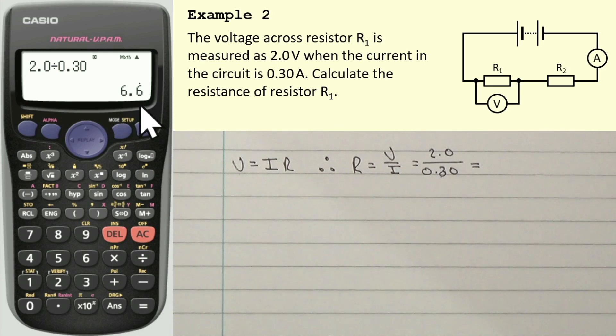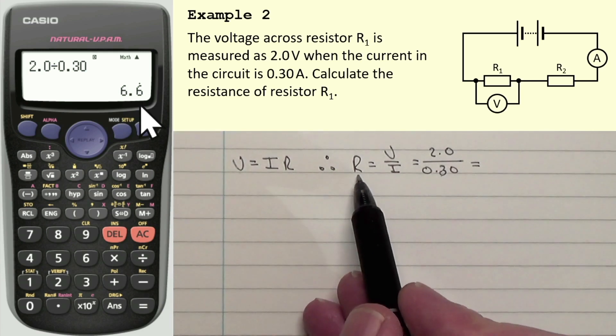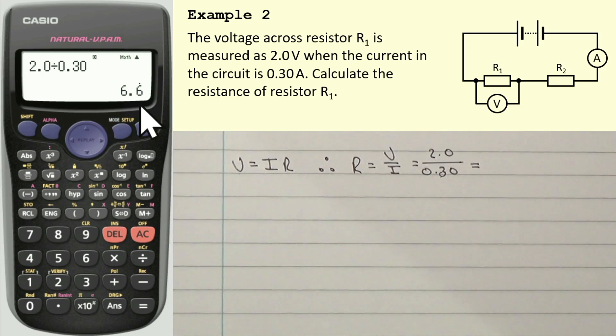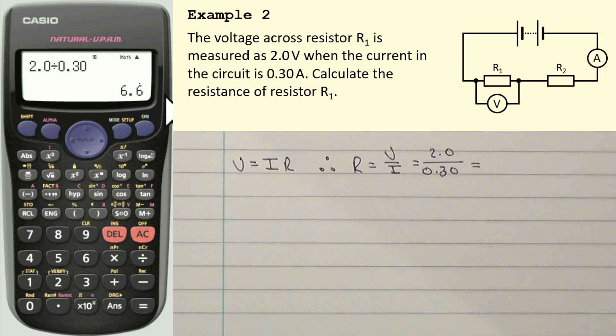Now, if I used to write 6.6 as the final answer. In case you didn't know, resistance is written in, or is measured in ohms. If I used to write the final answer as 6.6 ohms, I've lost a mark. Because there's a dot above that 6. Which, obviously, that's a recurring decimal. It shows that the resistance is actually 6.6666666 going on forever ohms.